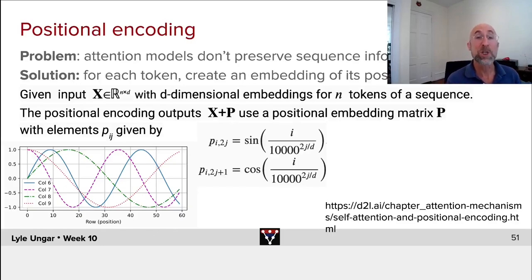Secondly, we need to have positional encoding. The problem is that attention models don't preserve the sequence information. They look at all the other words in the input and say which ones are important, and they forget which one was the first or the second or the third.